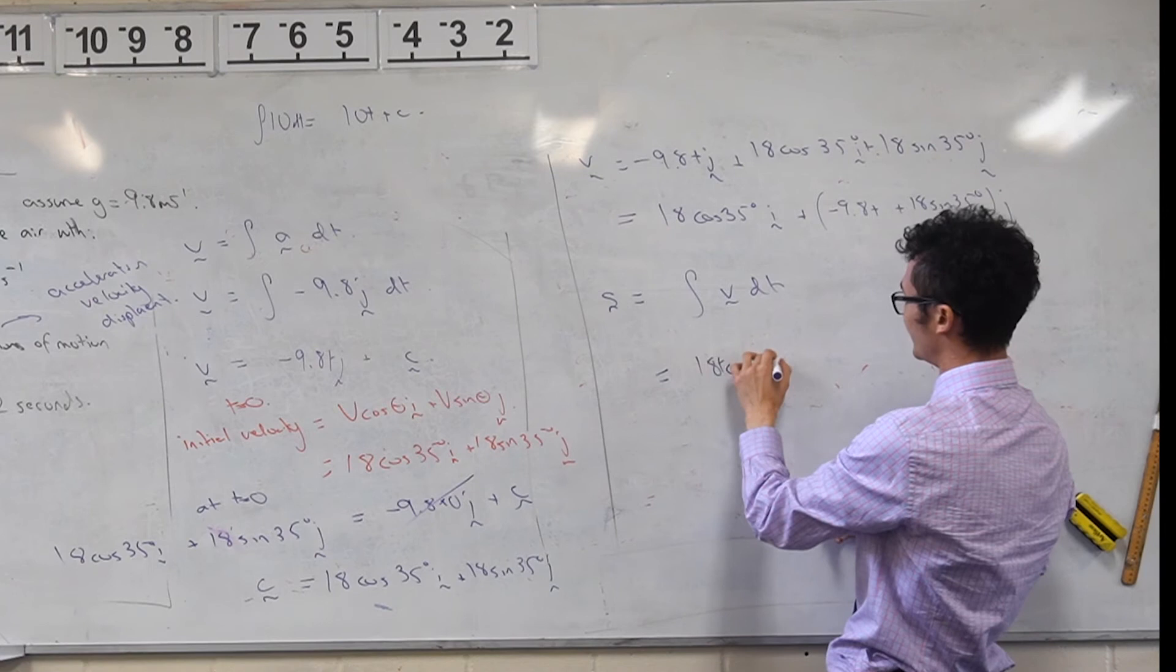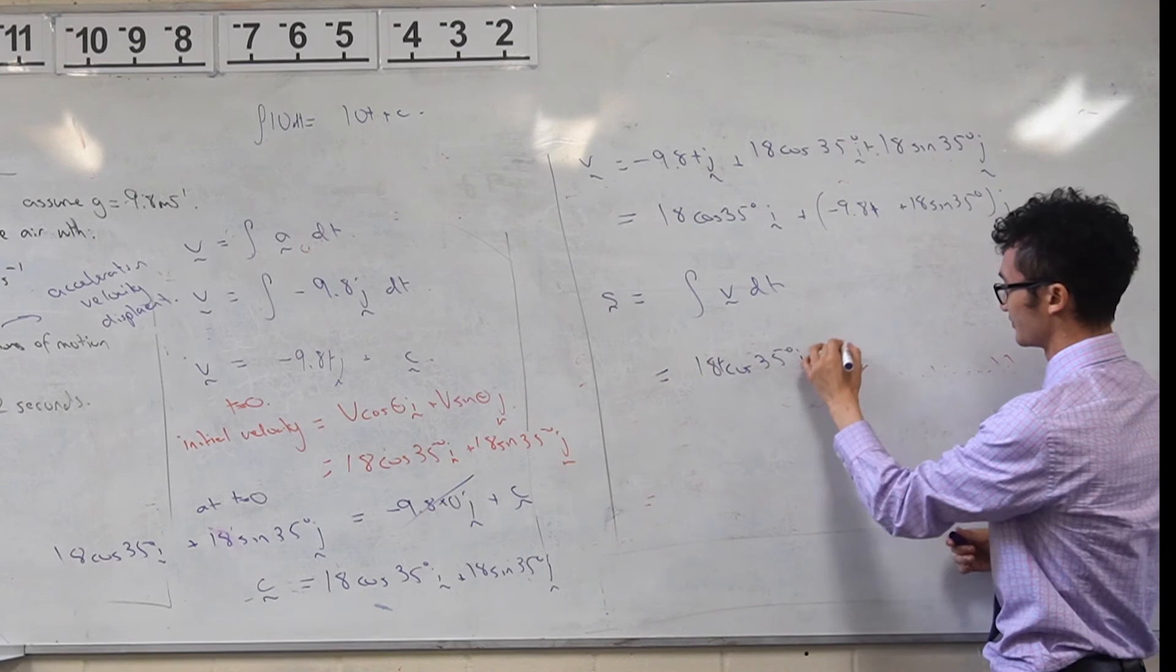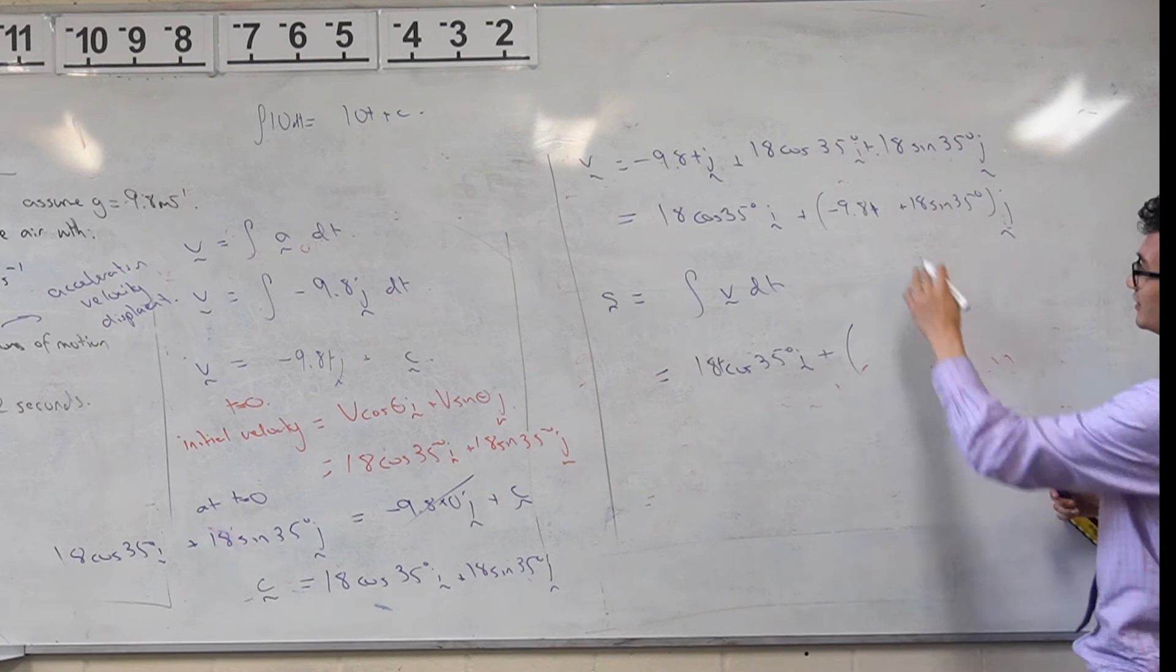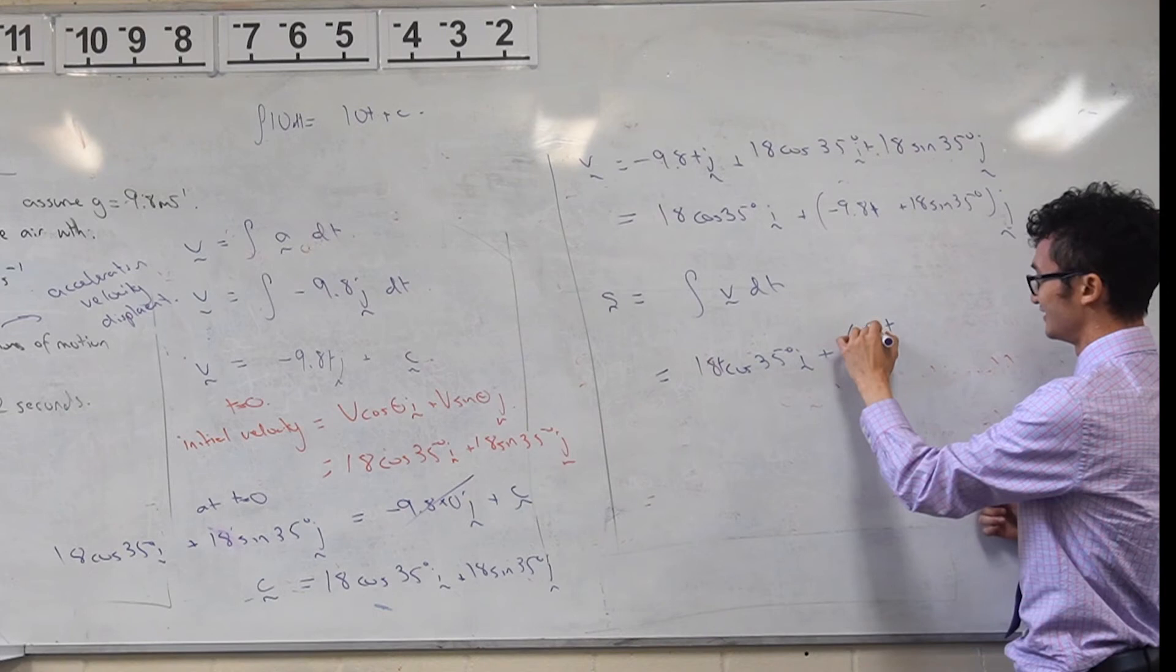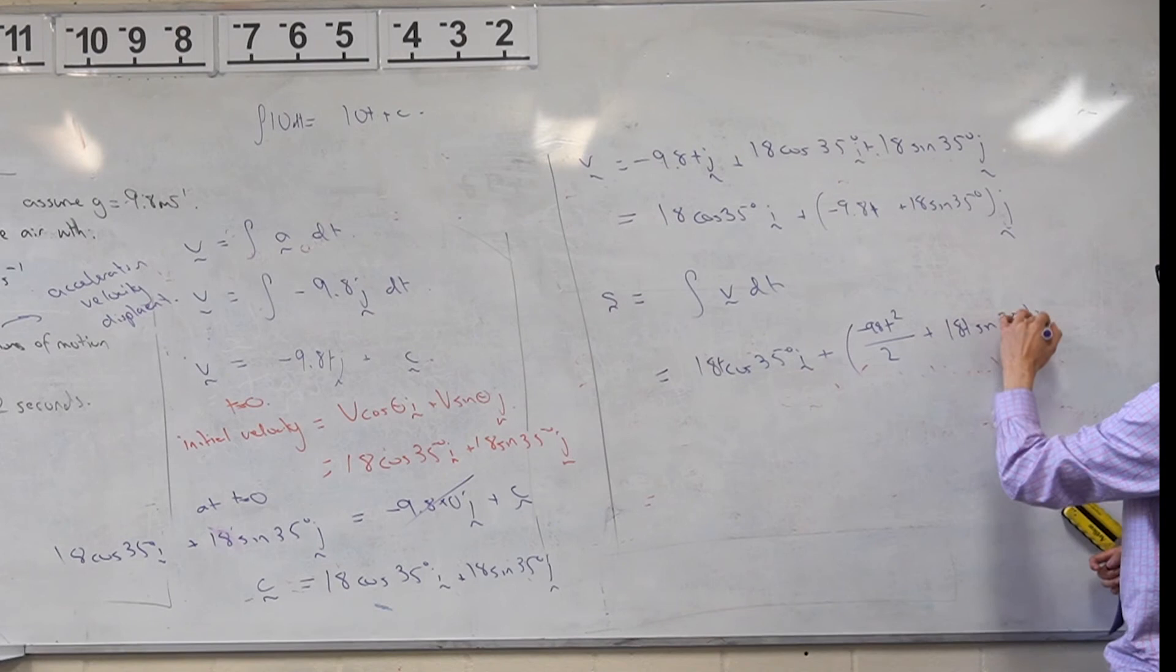What would this guy become? So there's a lot of pluses and t's, but 9.8t, what's that guy going to become? So t's are variable, and so we're integrating with respect to that. So maybe this formula might be starting to look a bit familiar from your physics courses. So I've got 18t sin 35 degrees j, and again, we still have a constant vector, don't forget about that.